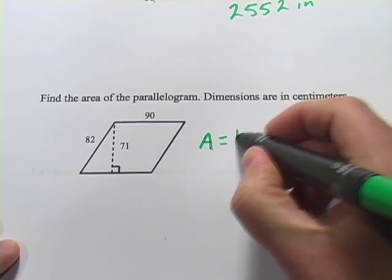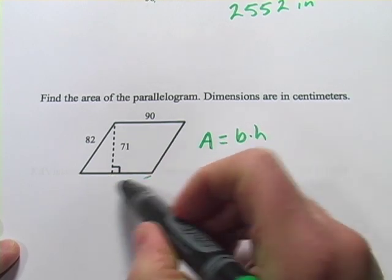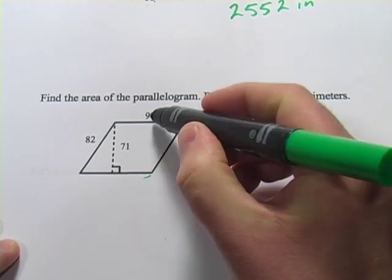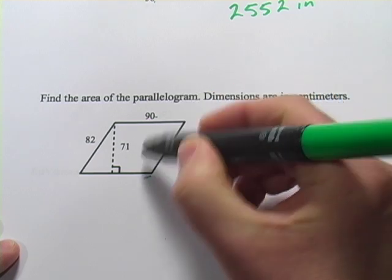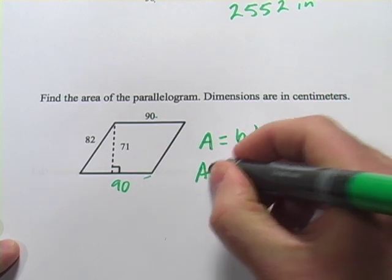And the area equals the base times the height. And down here, I don't see a measurement for the base, but I know it's the same as the top because the top and bottom are parallel and the same length. So this is 90. So our base is 90.